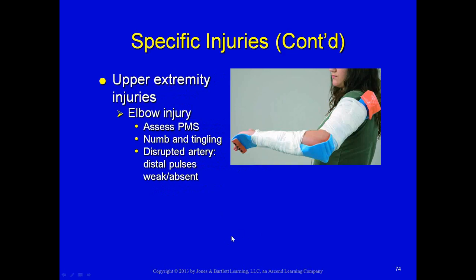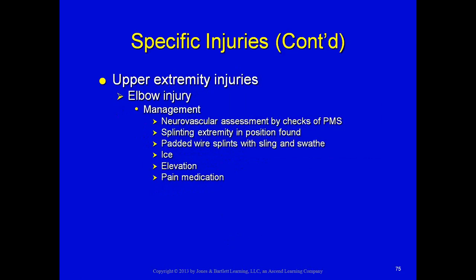Elbow injuries are extremely painful. You have likely bumped your funny bone — the ulnar nerve runs right along the elbow. With a dislocation or fracture, that ulnar nerve can be pinched and extremely painful. Sling and swath works great for elbow injuries. Do PMS checks before and after splinting. Ice, elevate, and administer pain meds.